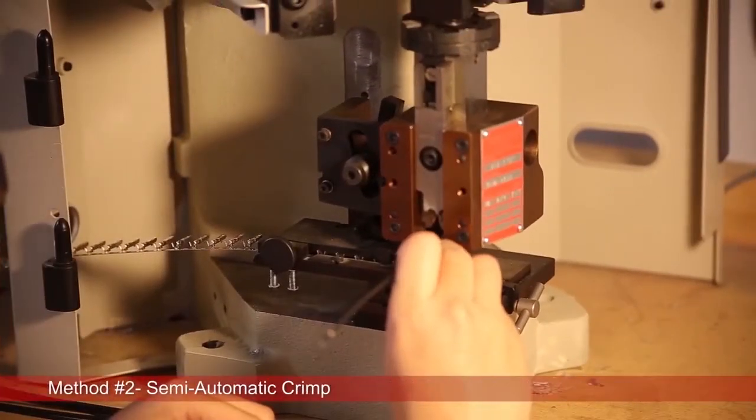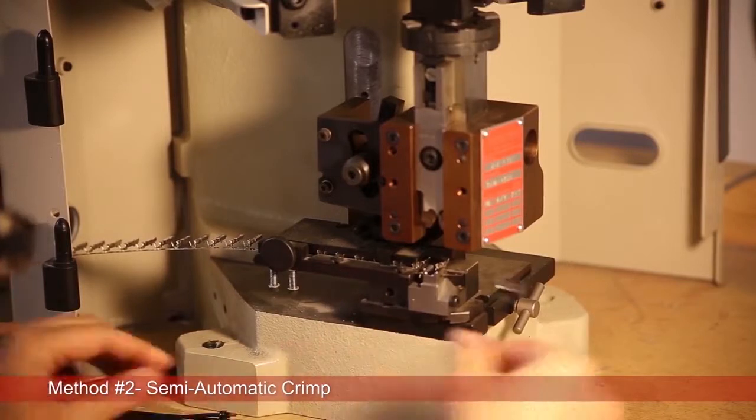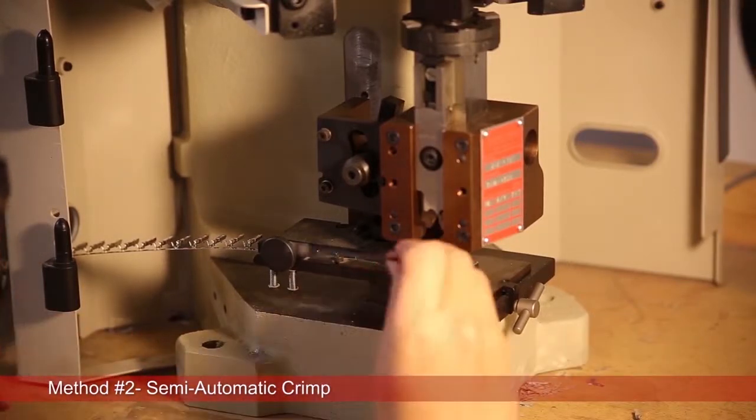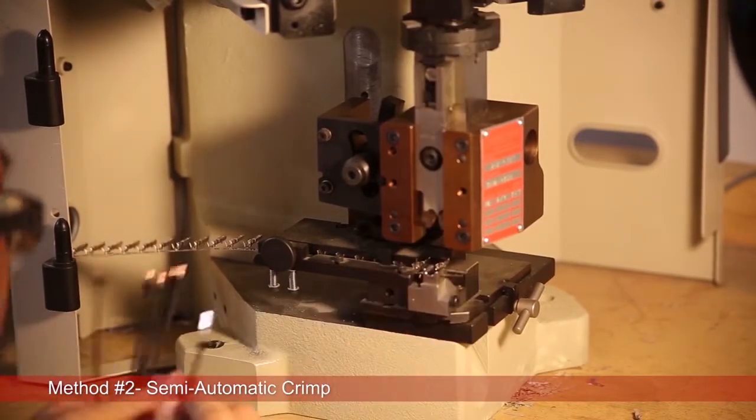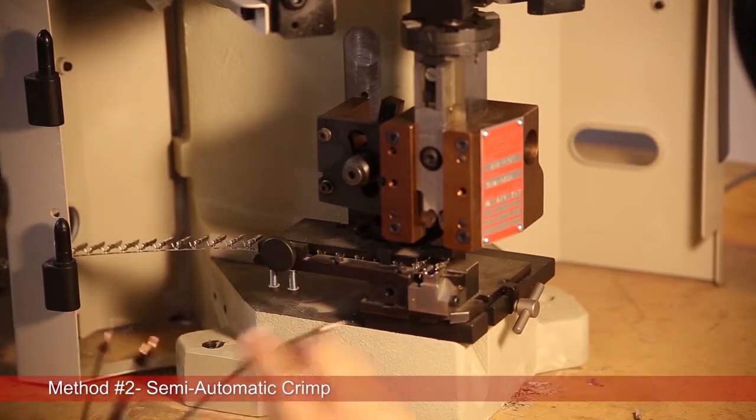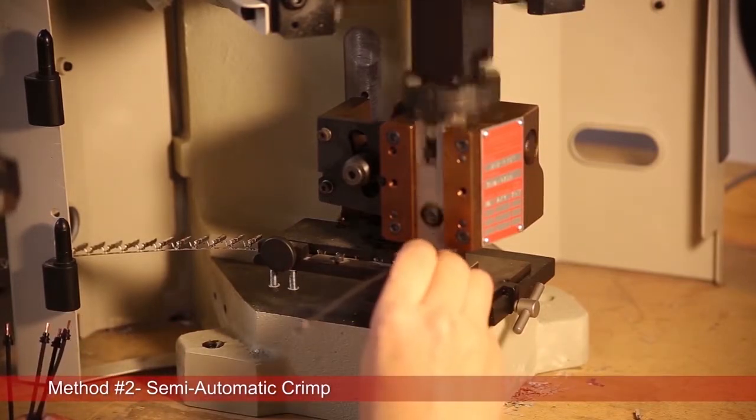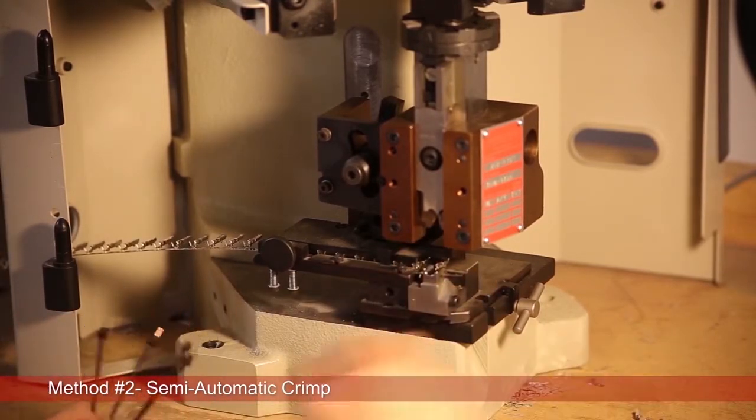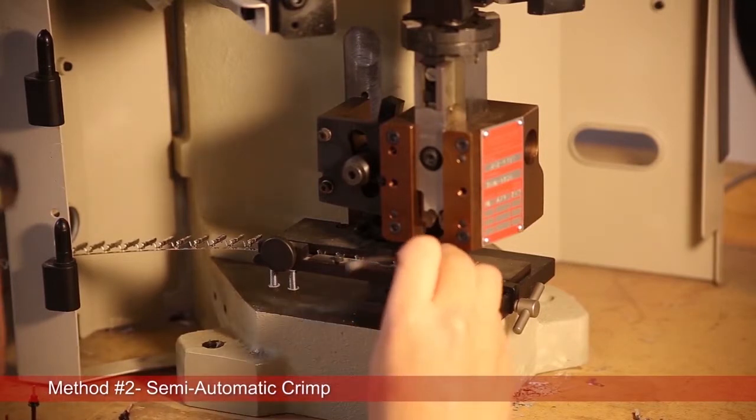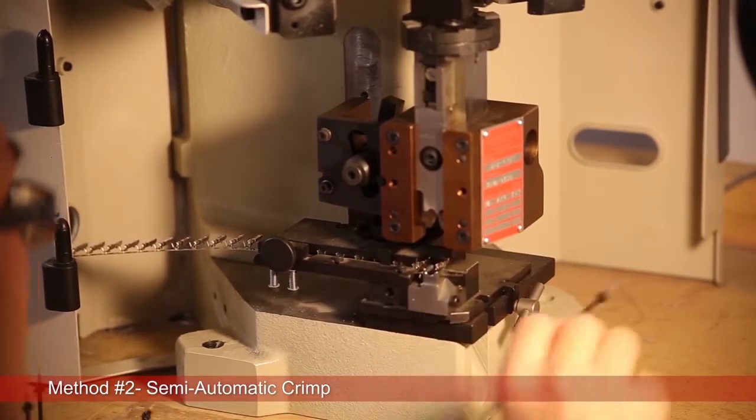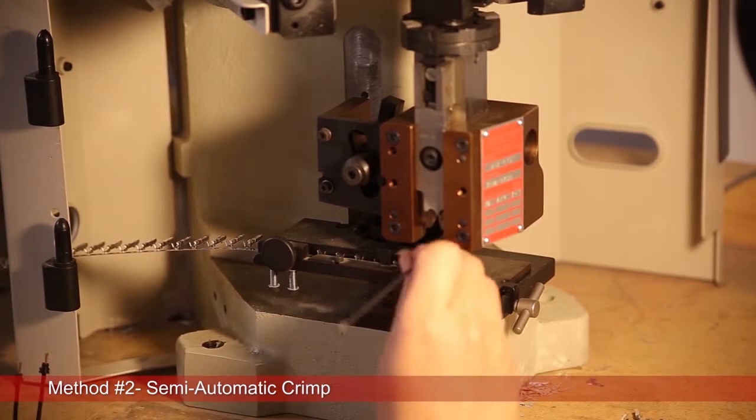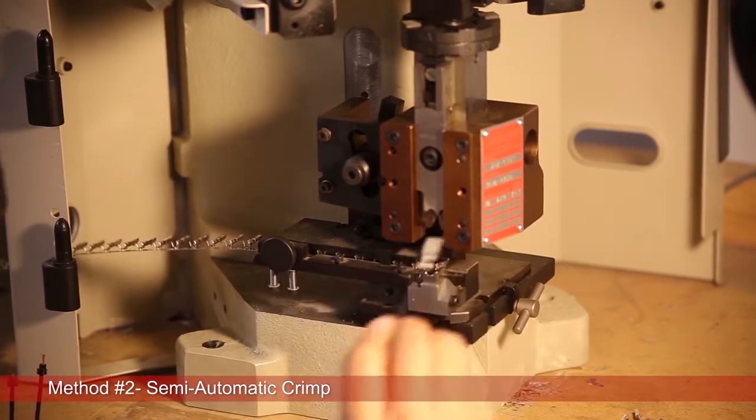So Brian's going to be doing a semi-automatic operation for us. Semi-automatic because the seals need to be installed manually, but the terminal crimp, as you can see, is semi-automatic. We do have a foot pedal to keep the dies moving. And the other thing that's important to remember here is there's no crimp force monitoring at this station.